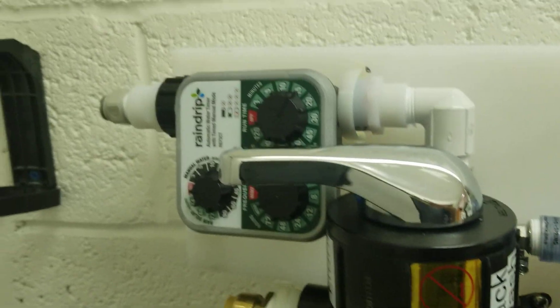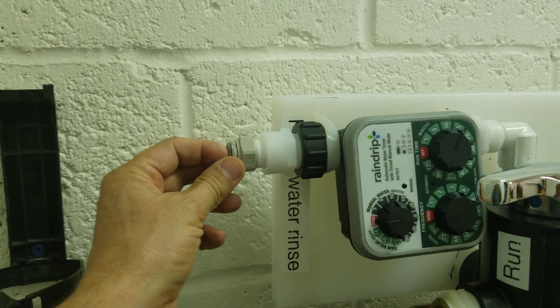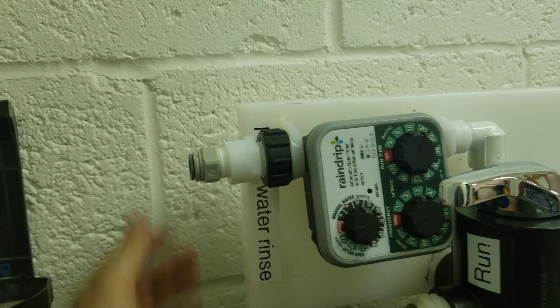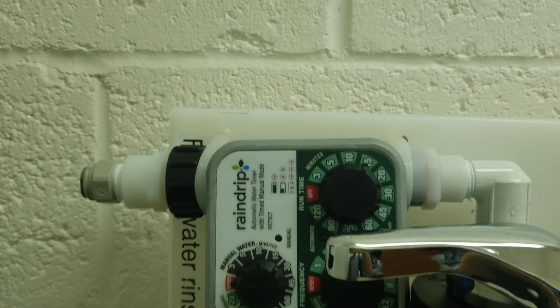Also in the system is included a rinse timer. This will connect to the fresh water, the pressurized water in the house. So we just run a line to it and we set the timer for once a week, 15 minutes.